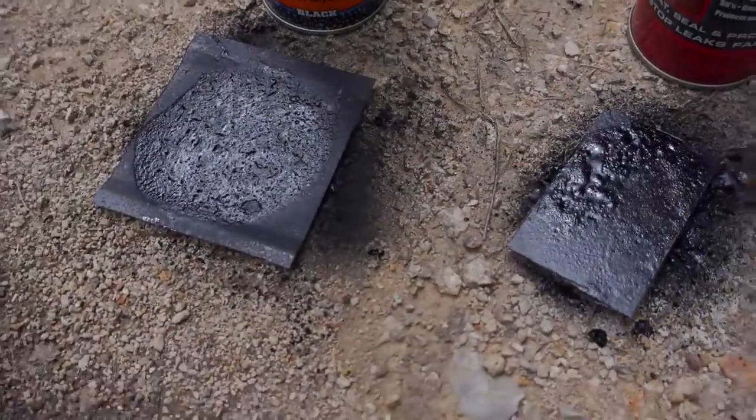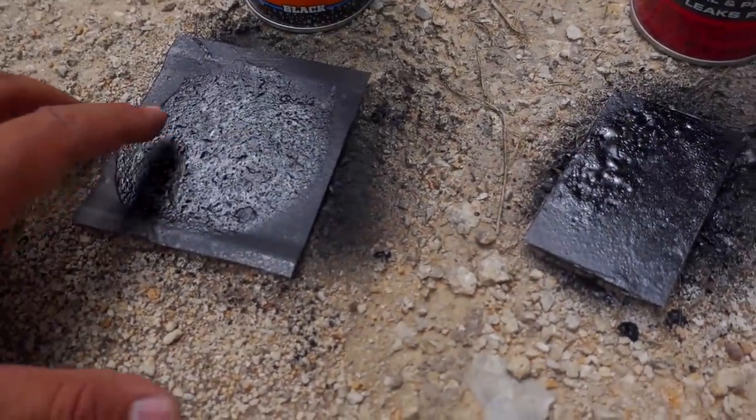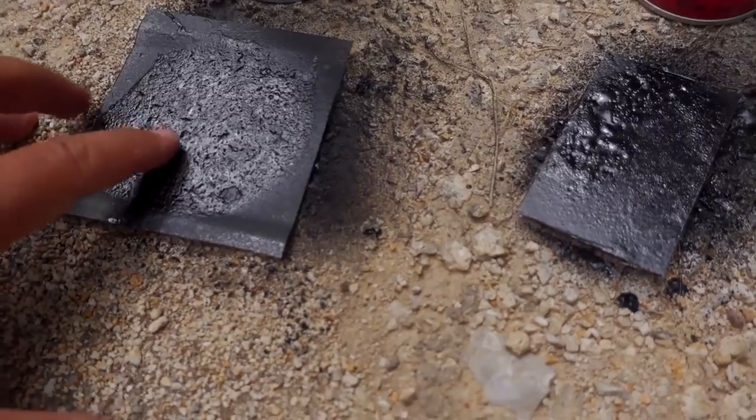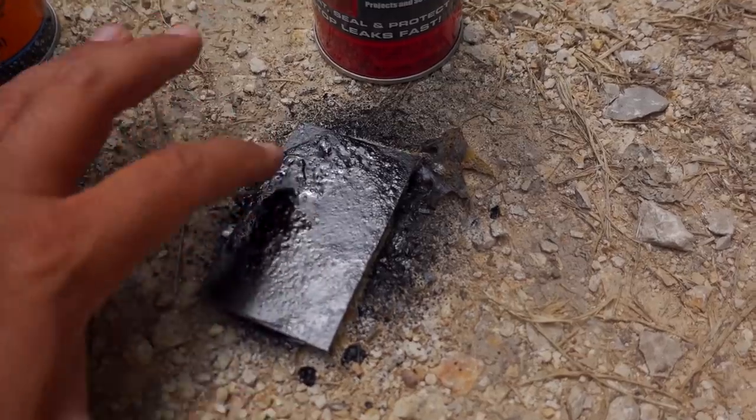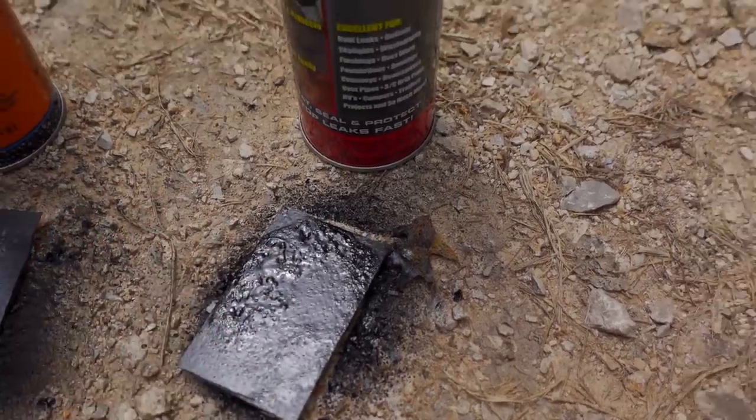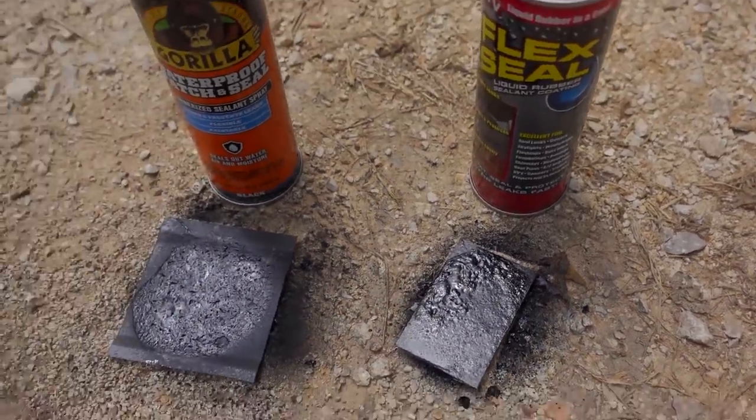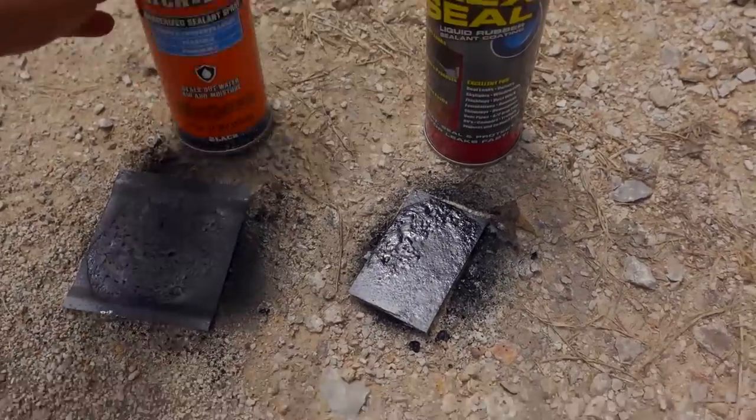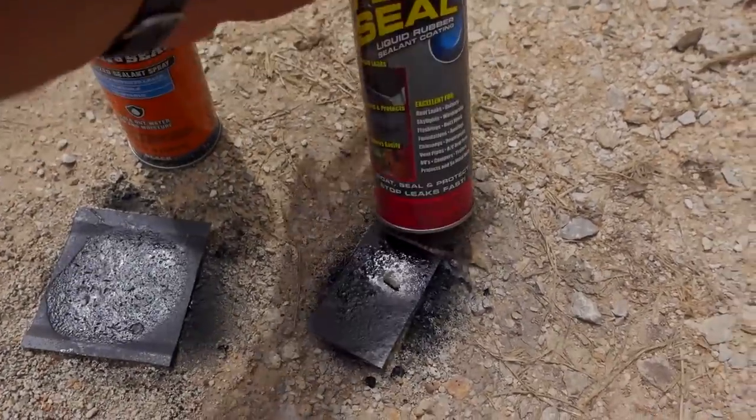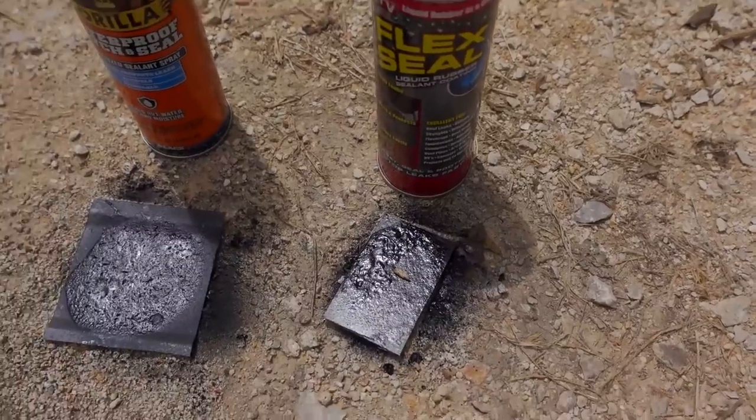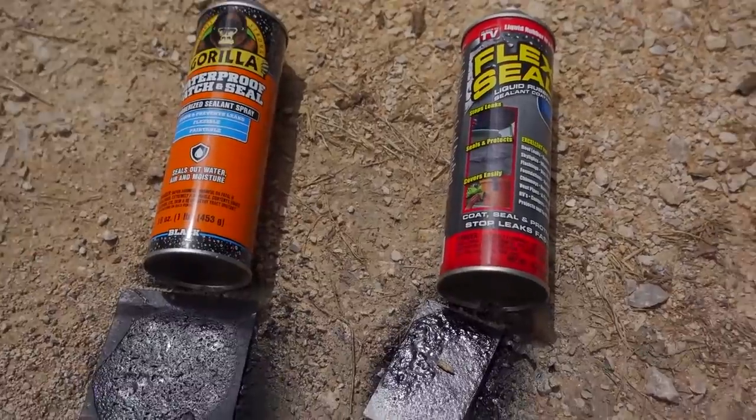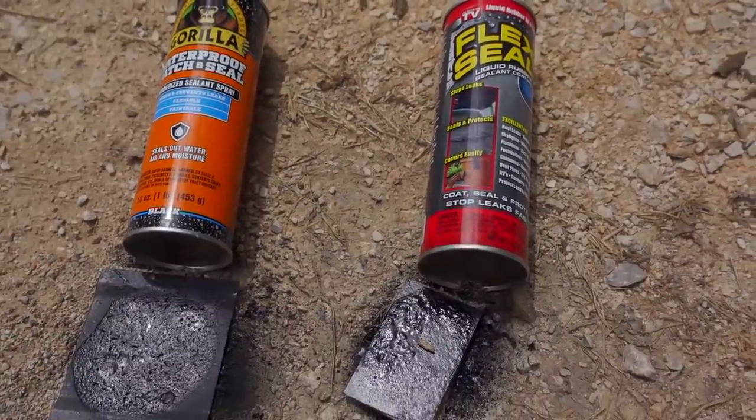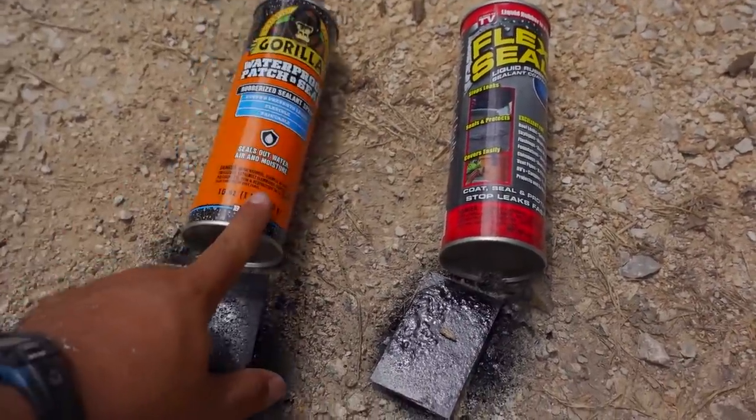Let's see how long it takes to dry. It's been almost an hour and it's still tacky, the Gorilla. The Flex Seal, they're about the same, so not much difference. So if I had to guess, I would say they're very similar. Only difference was the Gorilla was a little bit harder to take off on the metal, so maybe it does stick a little better.